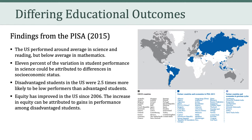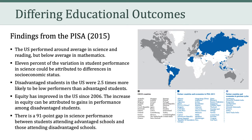There was a finding that equity has improved in the U.S. since 2006, and the increase in equity can be attributed to gains in performance among disadvantaged students. However, there is a 91-point gap in science performance between students attending advantaged schools and those attending disadvantaged schools. So again, we're seeing that within the U.S., when we focus on different subgroups, we have differing educational outcomes.